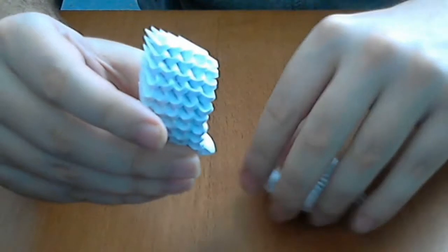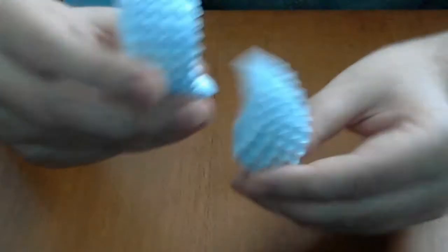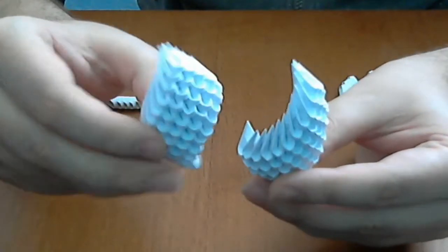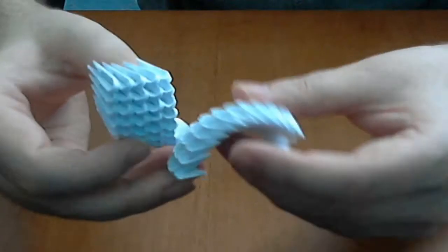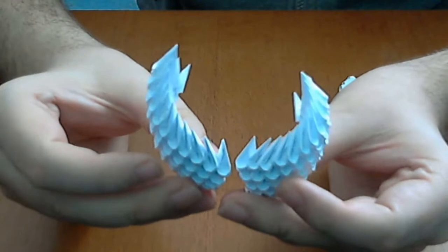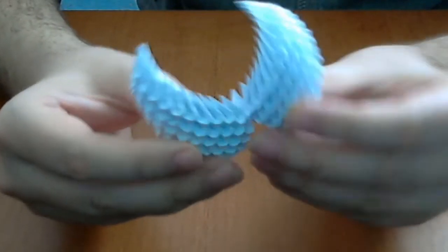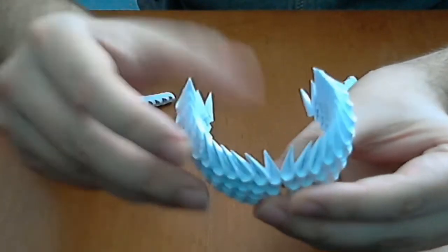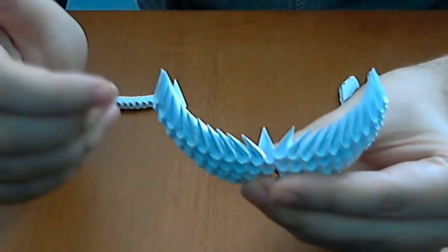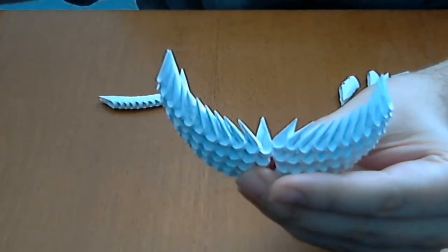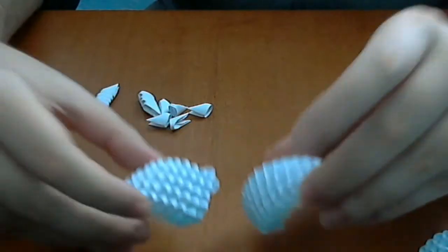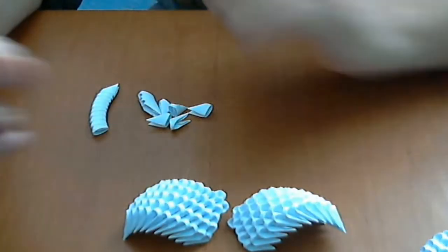Make another one, but do not forget to go in the other direction. The wings are not identical and you must go in the other direction. Make another wing. After we make 2 wings like this. Very good.